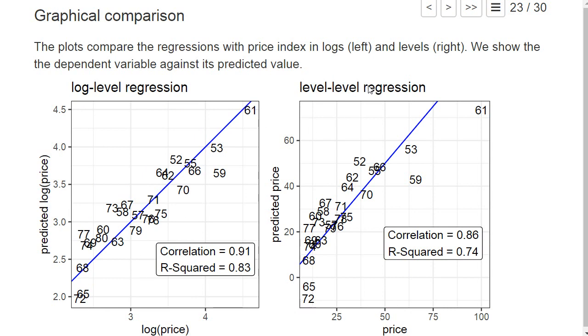Now if you would instead run a level-level regression, so if you wouldn't take a logarithm of the price, that is what we will see here. I looked at the price and that's the predicted price. And here you see that this fit is not so nice. In particular you see there are different problems. For example, for vintages that have a low price, actually our predicted price is negative.